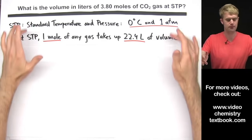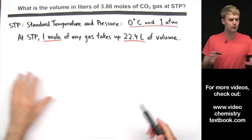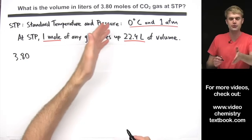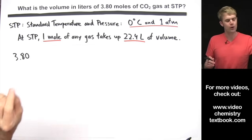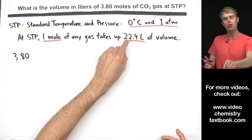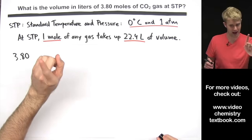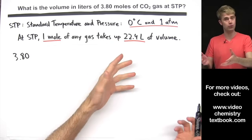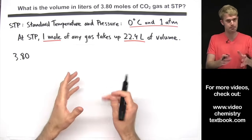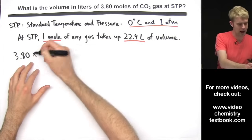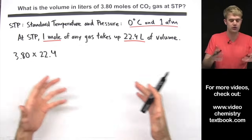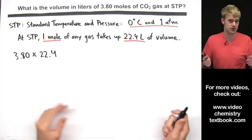Using this information, let's think through this problem. We have 3.80 moles of CO2 gas. We know that at STP one mole of gas takes up 22.4 liters — that's how much space one mole would take up. We don't have one mole; we have 3.80 moles. So we want to multiply 3.80 by 22.4, which is the amount of space that one mole takes up at STP.